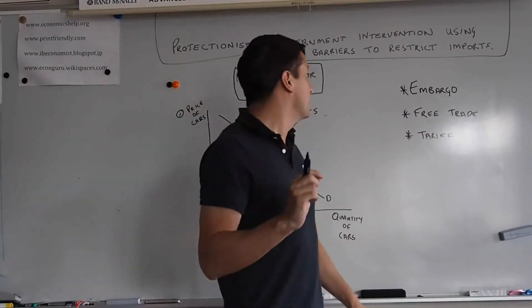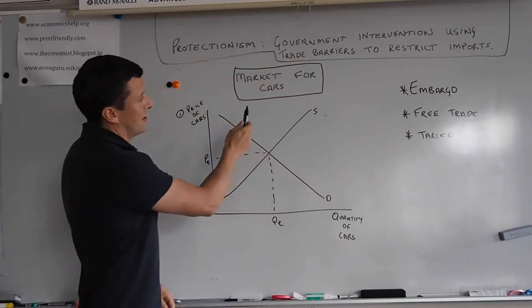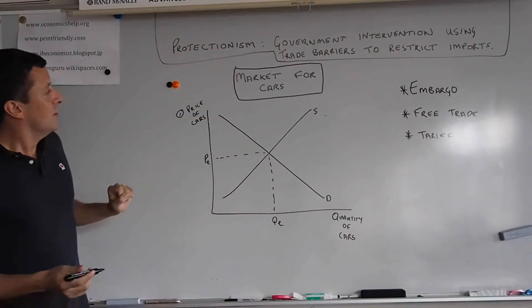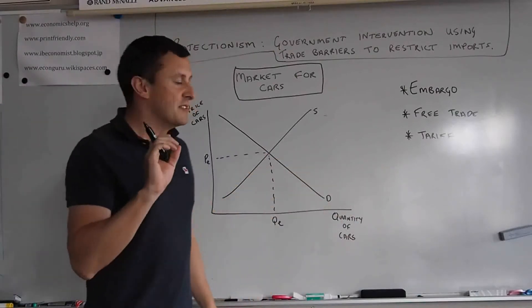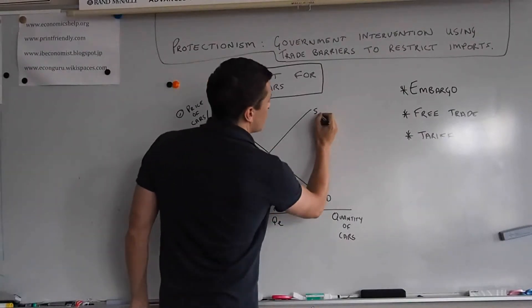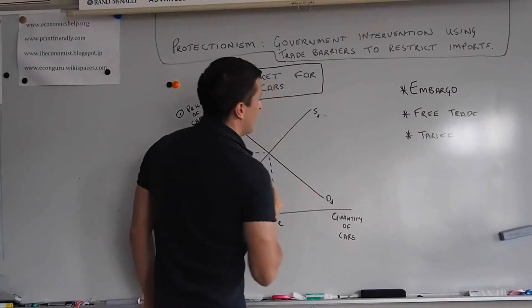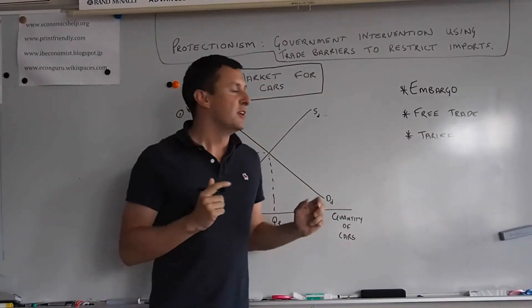And we're going to be using the example of the market for cars. So have a look at this diagram. Really simple, supply and demand that you know from microeconomics. But the slight difference here is that we're going to add a small d after supply and a small d after demand. That small d stands for domestic.